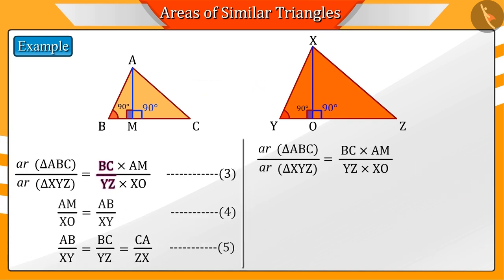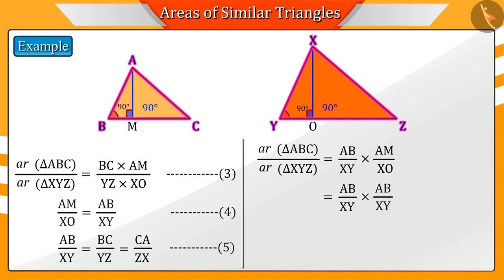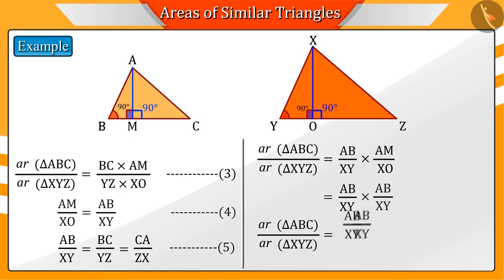In equation 3, in place of BC by YZ, from equation 5, AB by XY and in equation 4, in place of AM by XO. Putting AB by XY, we get the ratio between the areas of triangle ABC and triangle XYZ as the squares of the sides AB by XY.